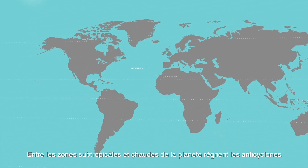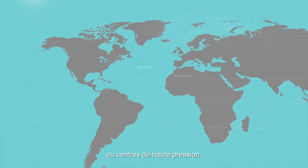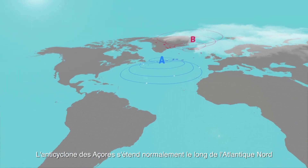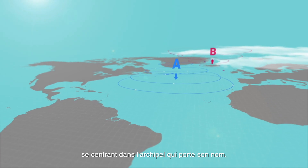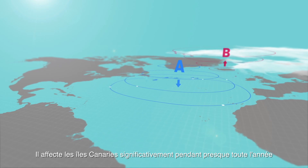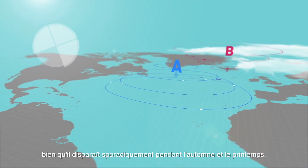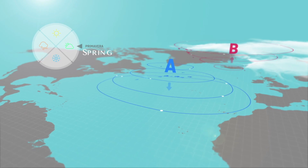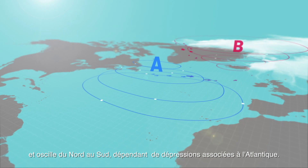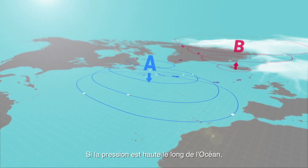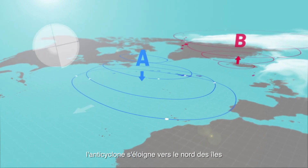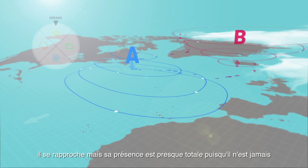The Azores anticyclone, or high pressure center, is found between subtropical regions and the cooler areas of the planet. It usually spreads throughout the North Atlantic and focuses on the Canary Islands, affecting them for most of the year, though it withdraws occasionally between autumn and spring. In winter it is more inconsistent and moves from north to south depending on the position of the Atlantic depression. When there is high pressure all over the ocean, it usually moves to the north of the islands.